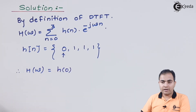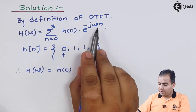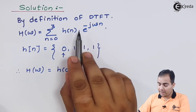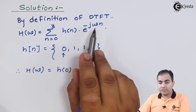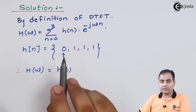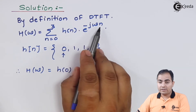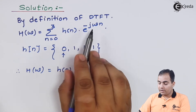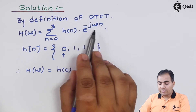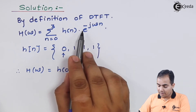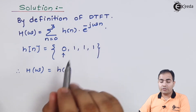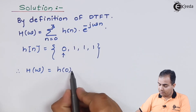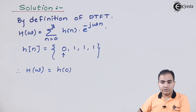First I will substitute n = 0. We get H(0), and since anything raised to the power 0 is 1, and 0 multiplied by anything is 0, e to the power 0 is always 1. So we write only H(0).